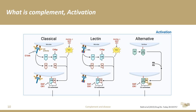Exactly the same thing happens in the lectin pathway, but the effector molecule is not C1Q — it's mannose-binding lectin, or MBL. MBL doesn't need the presence of IgG; it directly recognizes patterns of sugar molecules on the surface of bacteria. The downstream consequences are exactly the same — it forms the same C3 convertase associated to the bacterial cell wall.